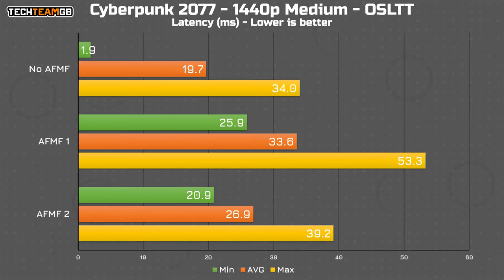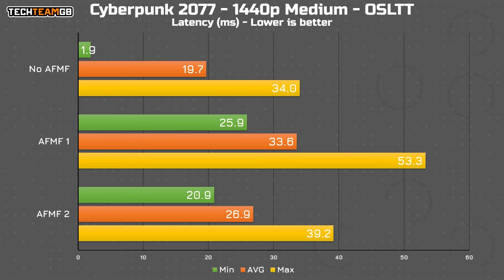That improvement is reflected in the latency data too. With no AFMF enabled, you're looking at around 20 milliseconds of end-to-end latency, and with AFMF2 you only add around 7 milliseconds — an increase of about 36.5% over no AFMF. This finally feels like a trade-off that might be worth making. AFMF1, even on the 6900 XT, still takes an unbearably long time to render inputs: 33.6 milliseconds compared to just 19.7 with no AFMF. That's not good enough, but AFMF2 is.